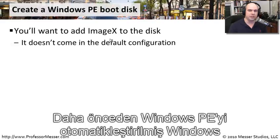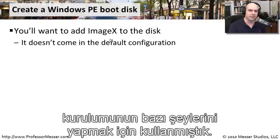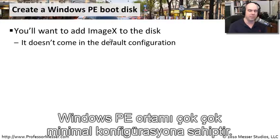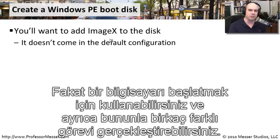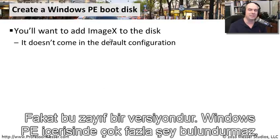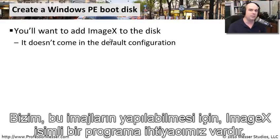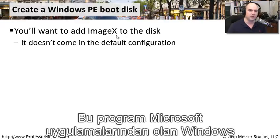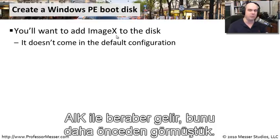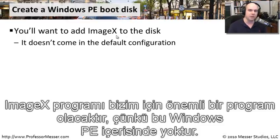We've already used Microsoft's Windows PE to do some of our automated Windows 7 installation. That's the Windows pre-installation environment - a very small, minimal configuration of Windows that you can use to start up a computer and perform a number of different tasks. It doesn't include a lot already on the Windows PE disk. For us to be able to do these images, we need to use a program called ImageX, which comes with the Windows AIK.